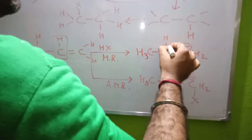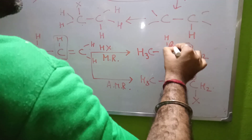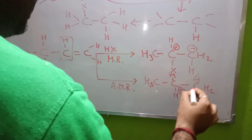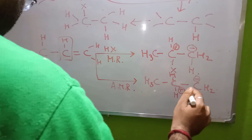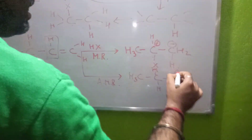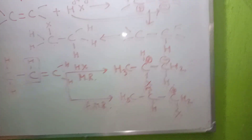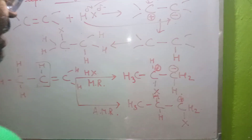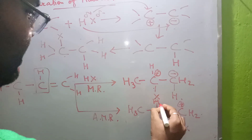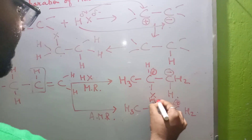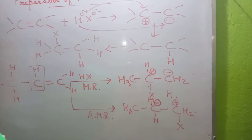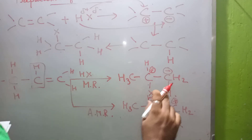If you remember carefully, this carbon atom is having a plus charge here. According to anti-Markovnikov's rule, just the opposite thing happens — the carbon atom which is having more number of hydrogen atoms will be having a plus charge.